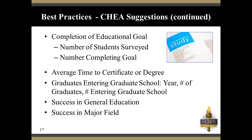Other examples in the CHEA profile include some indication of the student's acknowledgment of completing their educational goal — including the number of students surveyed and the number who say they completed their goal — so satisfaction information is linked to whether you accomplished the goal you had when you first enrolled. Other ideas include average time to certificate or degree, the number of graduates entering graduate school, some indication of success in general education, and success in the major field.